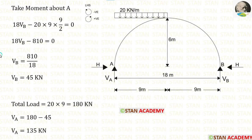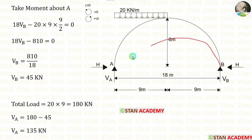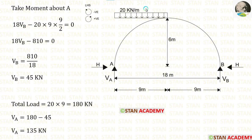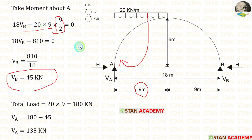Now let us calculate the vertical reactions. First, I am going to calculate the vertical reaction VB by taking moments about A. Moving towards the left-hand side, clockwise is negative and anti-clockwise is positive. VB acts towards A in the anti-clockwise direction, so it is positive, giving 18·VB. The UDL of 20 kN/m acts clockwise, so it is negative: 20 × 9 × 9/2. Finally, VB equals 45 kilonewtons.